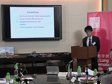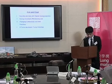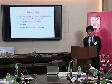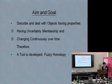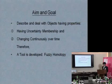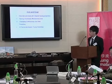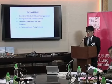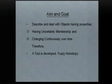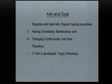What is our aim and goal of this project? We find that there are some objects having an uncertainty membership and it changes continuously over time. In order to deal with and describe this situation, we want to create a tool called fuzzy homotopy. How does this fuzzy homotopy deal with these specific objects, and what properties does it have?